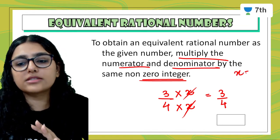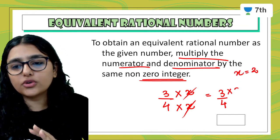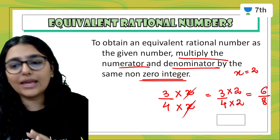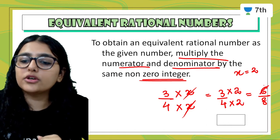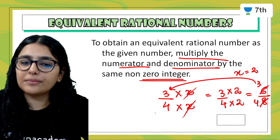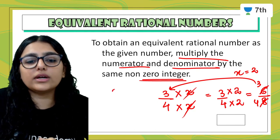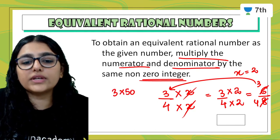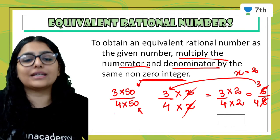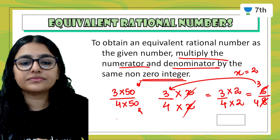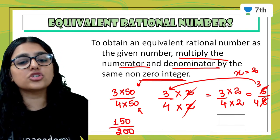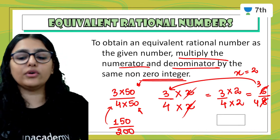For example, let x equal 2. So 3 into 2 is 6 and 4 into 2 is 8, giving 6 by 8. When you take the lowest form of 6 by 8: 2 times 3 is 6 and 2 times 4 is 8, so you get the original number 3 by 4. You can also do 3 into 50 upon 4 into 50, giving 150 upon 200, and when you take the lowest form it will be 3 by 4.